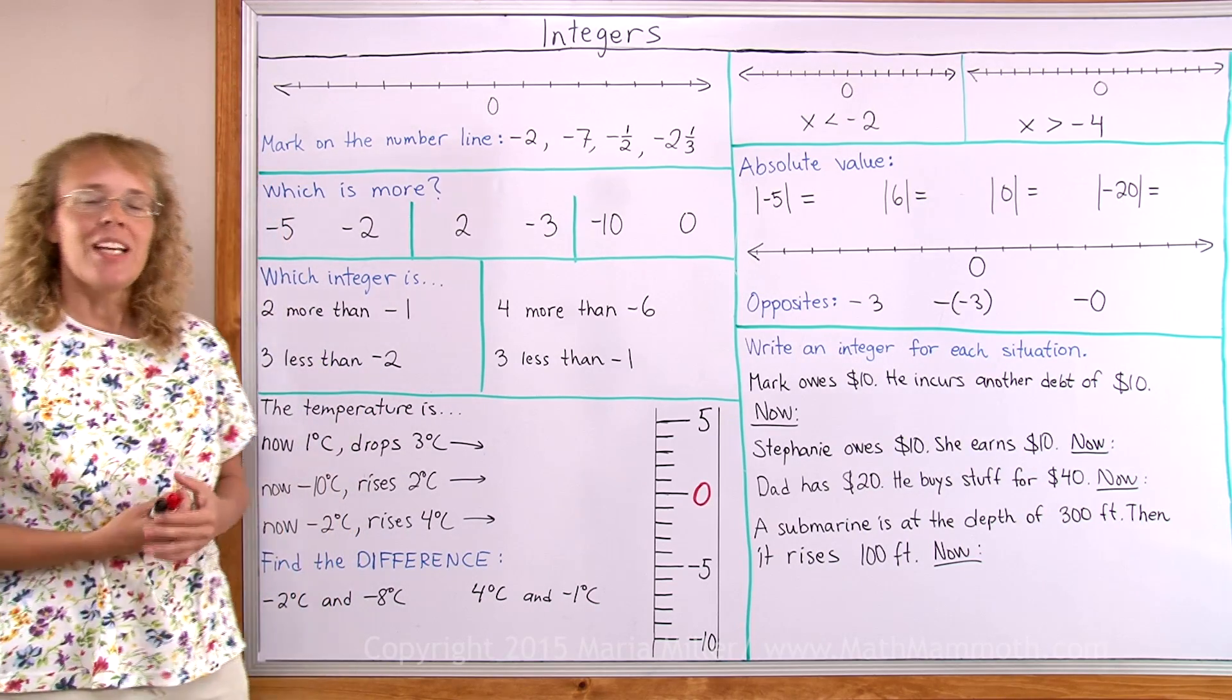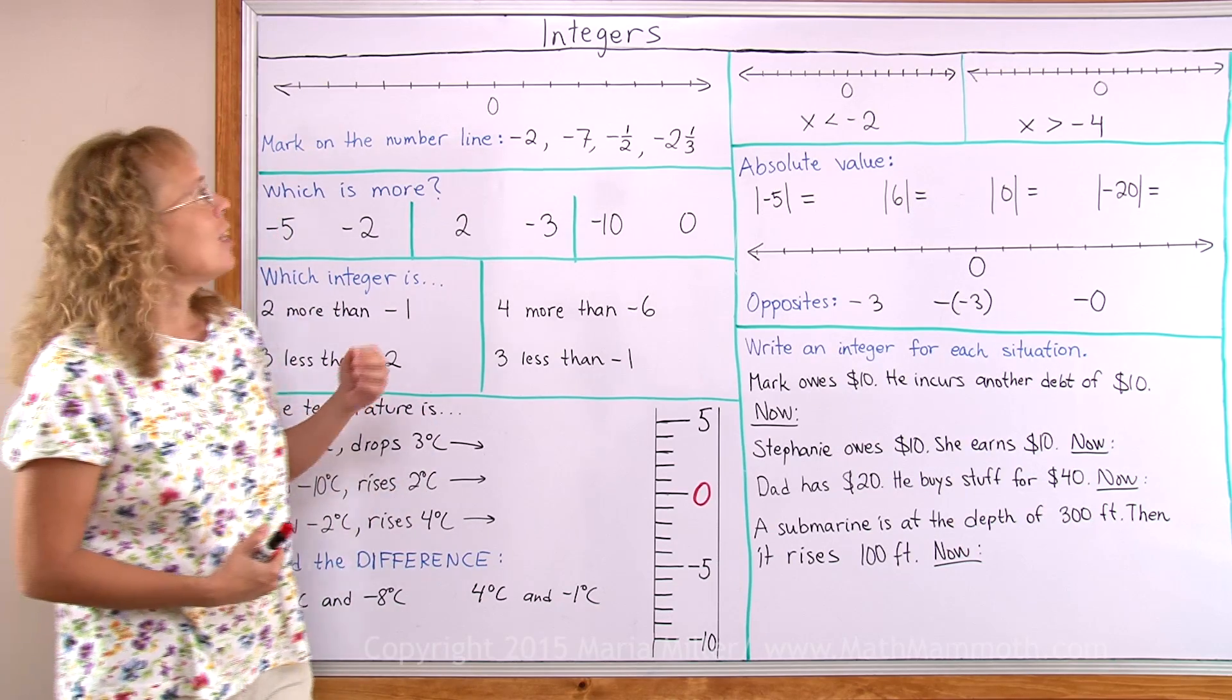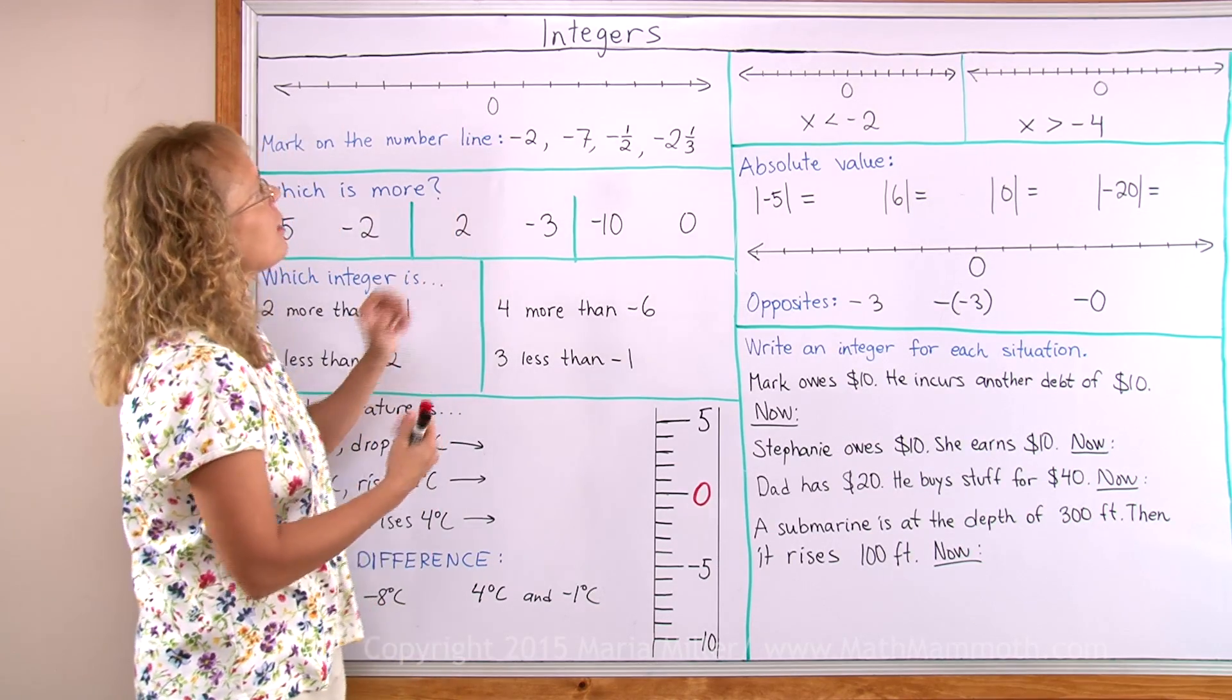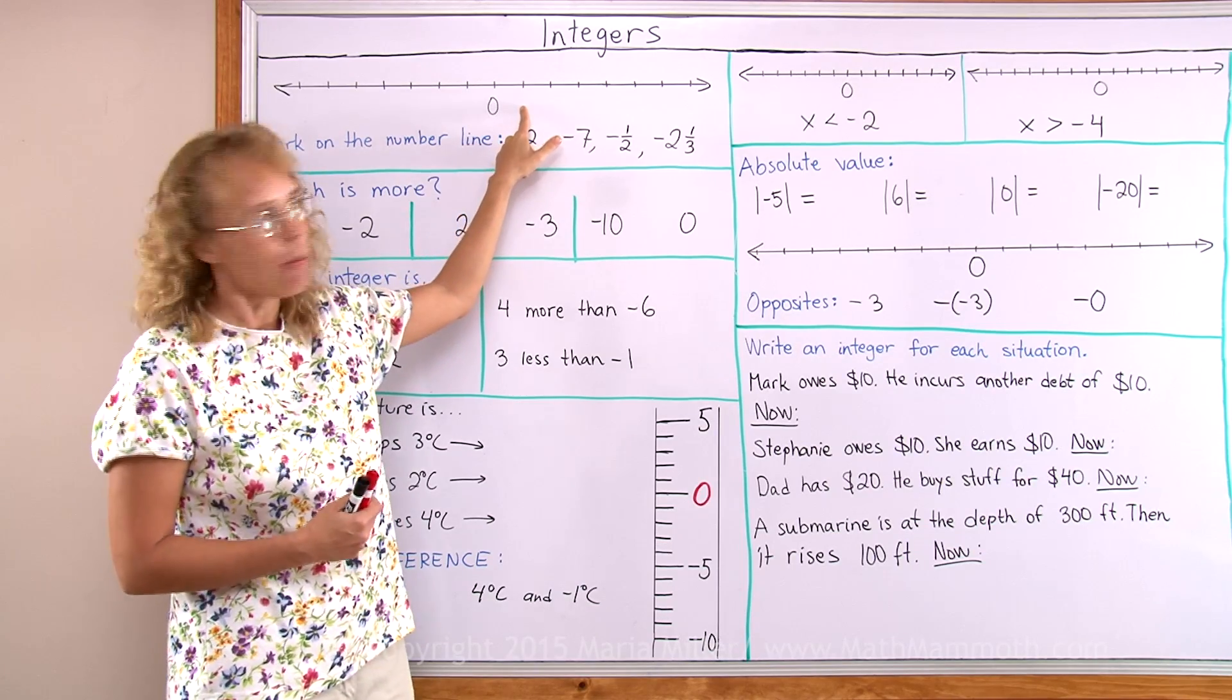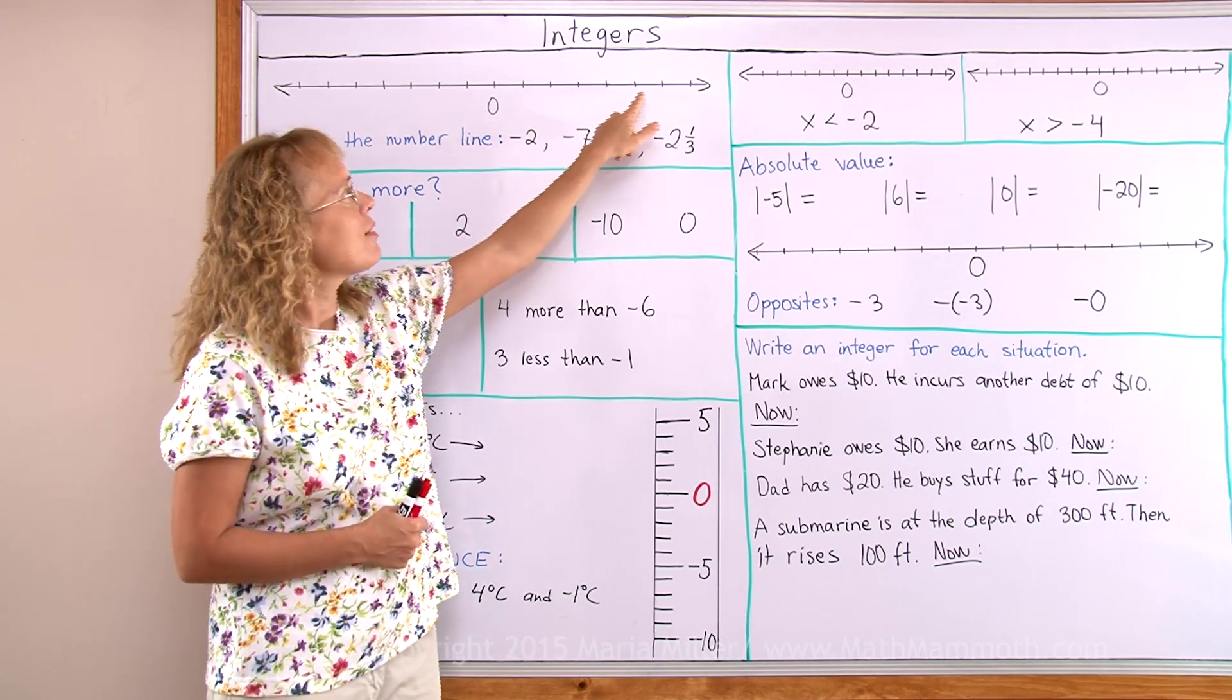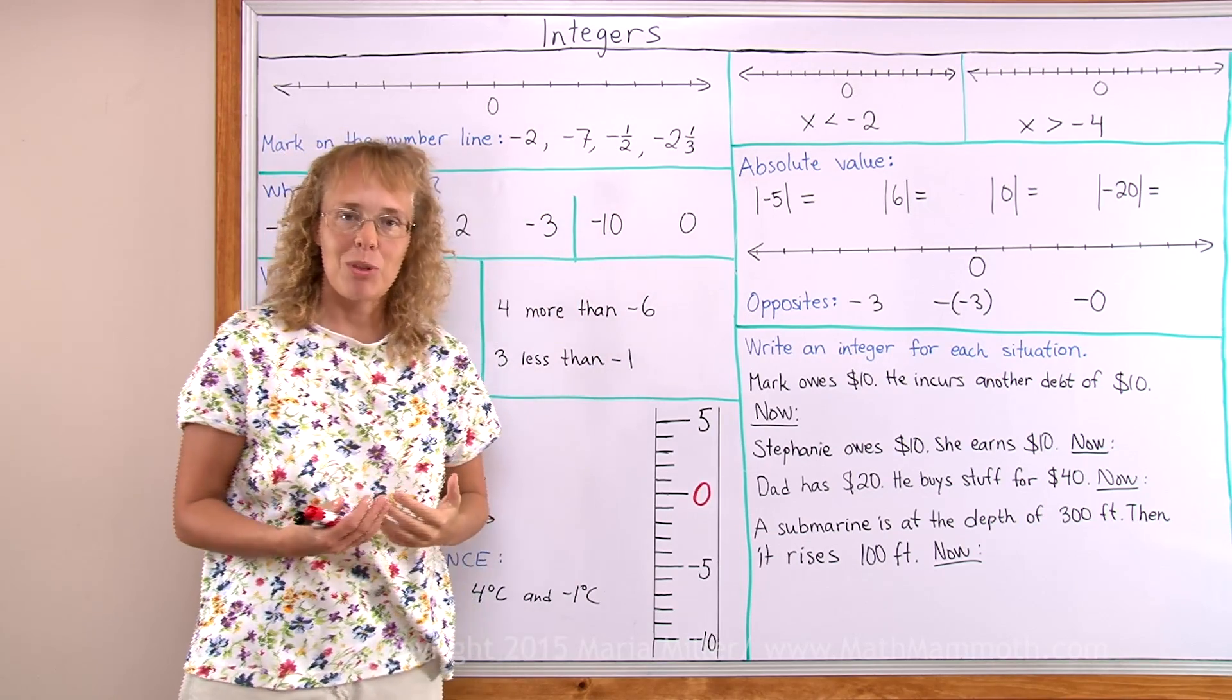Now, what are integers? Basically they are our whole numbers. And here I have a number line. I wrote zero here. So you know that after that would come 1, 2, 3, 4, 5, 6, 7. All those numbers are integers.